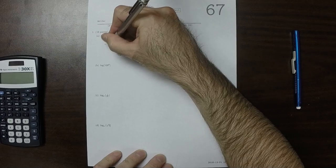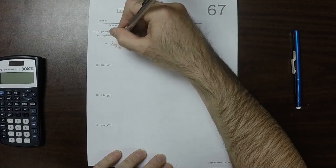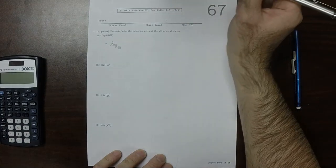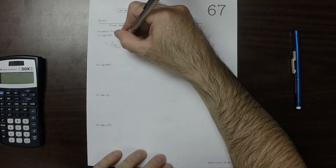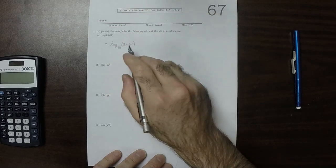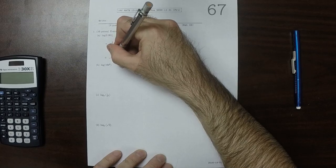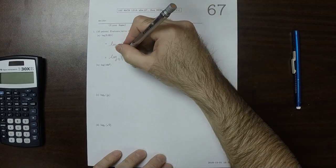That's the same as log base 10, because when the base is not specified, it's understood to mean 10. So that's 0.001, and then we can write 0.001 as a power of 10.